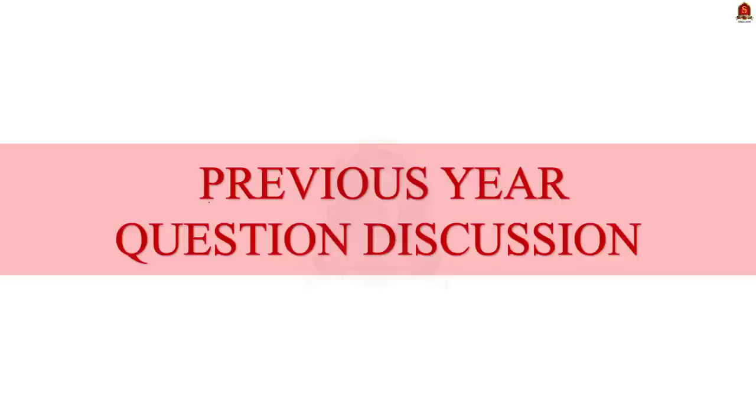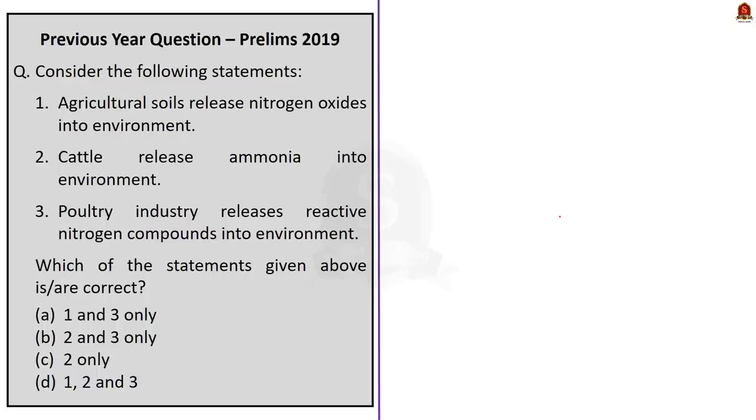So now let's move on to the first session of the day, which is the previous year question discussion. In the previous year question session, we are taking up questions from prelims 2019. And today I have taken this question, which is based on pollution from agriculture and allied activities. The question talks about nitrogen oxides, ammonia and reactive nitrogen released into the environment. Therefore, to answer this question, we have to have a basic understanding about nitrogen first.